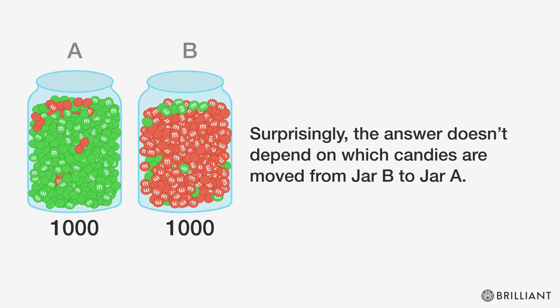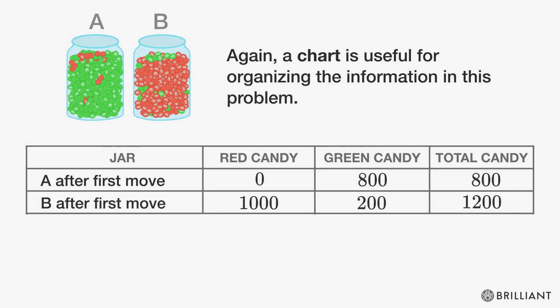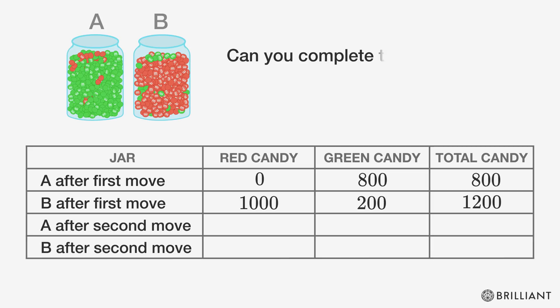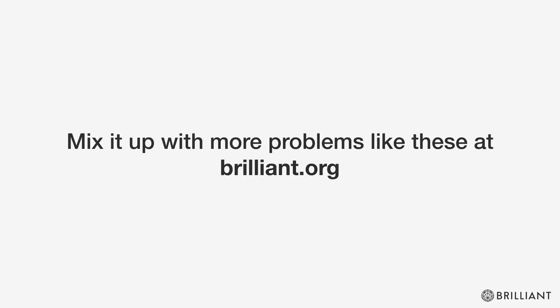Surprisingly, the answer doesn't depend on which candies are moved from jar B to jar A. Again, a chart is useful for organizing the information in this problem. Can you complete the chart and figure out which jar has a higher percentage of its original candy? Mix it up with more problems like these at Brilliant.org.